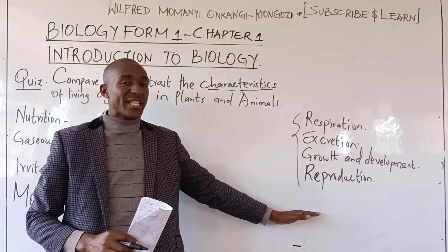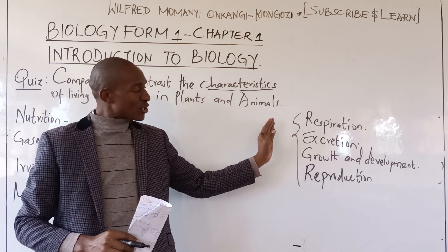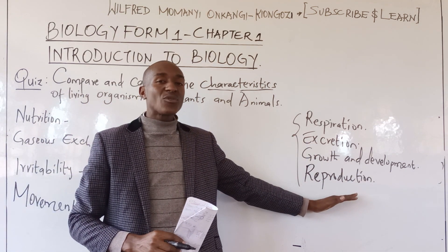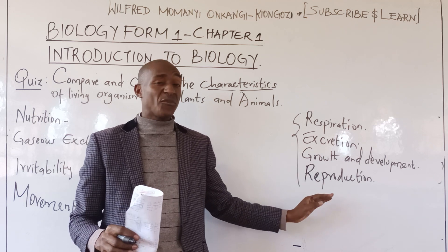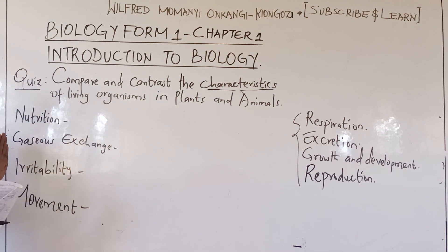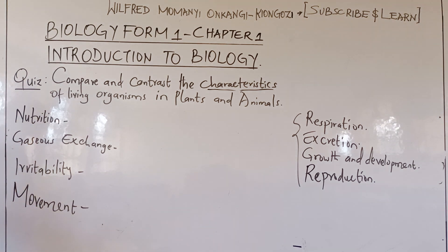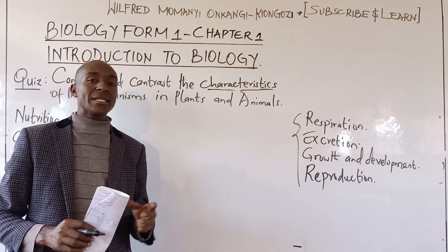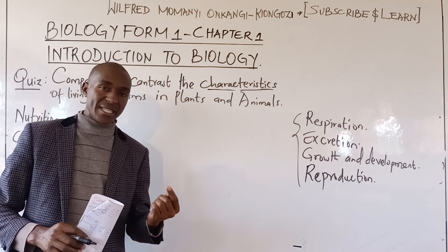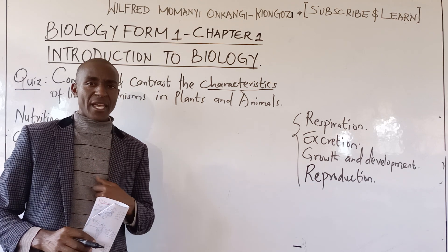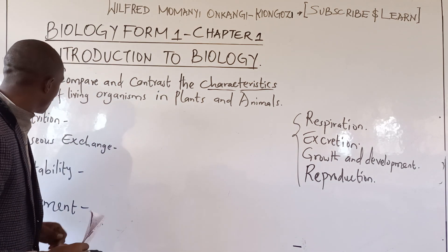The characteristics written on one end are those where we cannot see very sharp differences between plants and animals, while from the other side we can see differences. I would want us to discuss each of these characteristics, giving differences, and in case of a similarity, we do the same. We start with the first characteristic, which is nutrition.